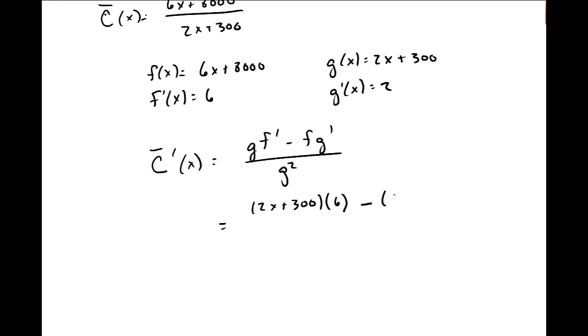g is 2x plus 300, and f prime is 6, minus 6x plus 8,000, times 2, over g squared, 2x plus 300 squared.